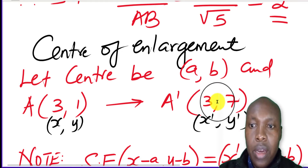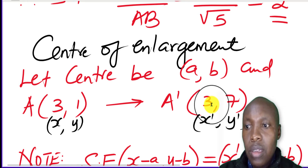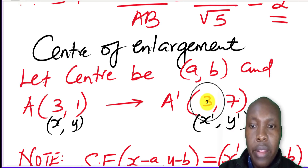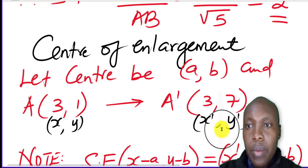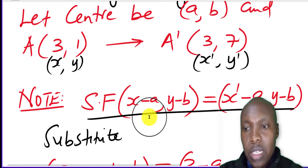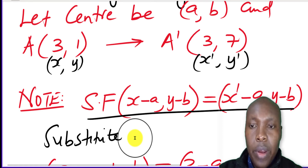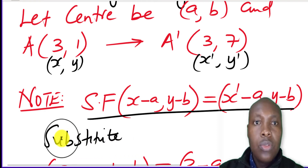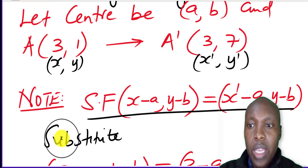So we let A have coordinates: x = 3, y = 1; and A' have coordinates: x' = 3, y' = 7; and the center is (A, B). The formula is: scale factor × (x − A, y − B) = (x' − A, y' − B). Now that we have the scale factor and the image and object points, we substitute those values and solve for A and B.